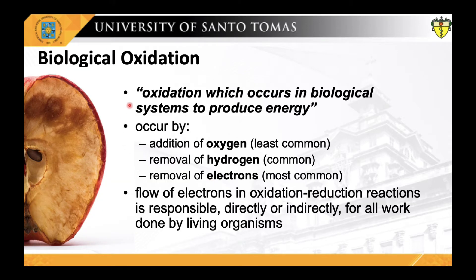Biological oxidation is the type of oxidation which occurs in biological systems to produce energy. Oxidation in the cell can occur in several ways: the least common route is via the addition of oxygen; another way is with the removal of hydrogen; but the most common route is the direct removal of electrons. Electrons, however, are not stable in the free state, so their removal from a substance — oxidation — must be accompanied by their acceptance by another substance — reduction. Hence the reaction is called an oxidation-reduction reaction, or redox reaction.